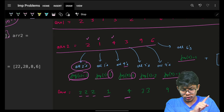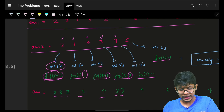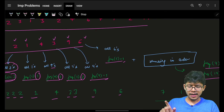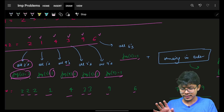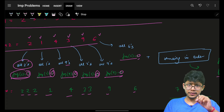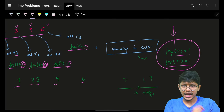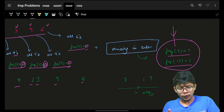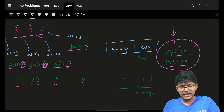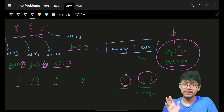I go to 4, get its frequency, put one 4. I go to 3, frequency is 2, so I put two 3s. Then 9, put one 9. Then 6, put one 6. Now the map has those frequencies reduced to zero. Whatever remains in the map with non-zero frequency — like 7 and 19 — I iterate on the map in sorted key order and append them the corresponding number of times.